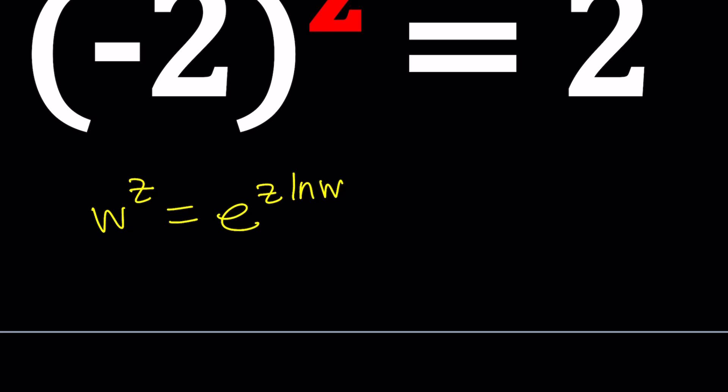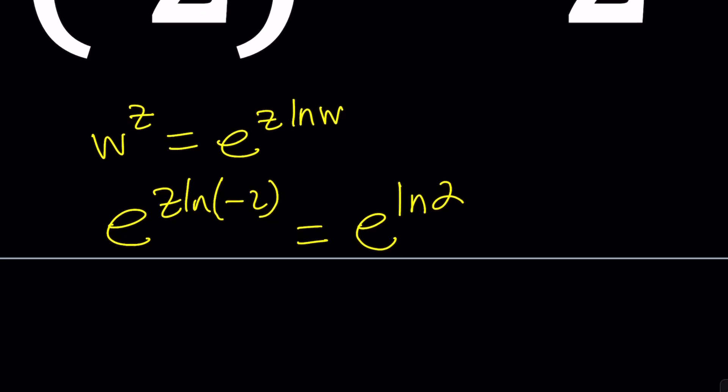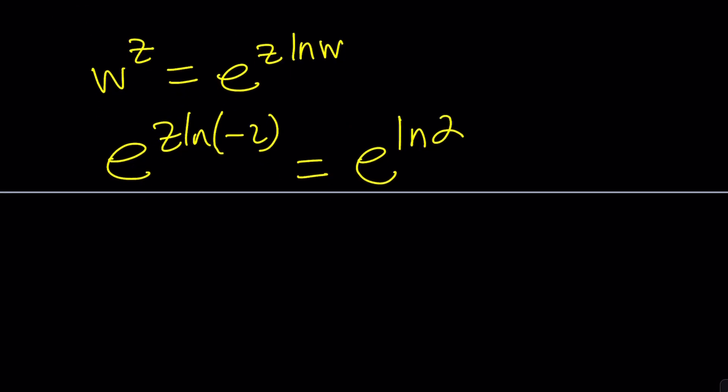The left-hand side, I'm going to write as e to the power z ln negative 2. Just bear with me. I keep it as ln first. And then 2 can be written as e to the power ln 2. Easy, right? That's just real. Great. Now, what am I getting from here? Well, because the bases are equal, can I say that z ln negative 2 equals ln 2, and from here, z equals ln 2 divided by ln negative 2. Case closed, right? Well, something is missing.